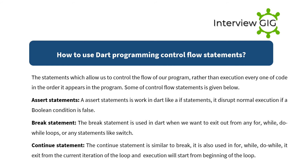How to use control flow statements in Dart? Control flow statements allow us to control the flow of a program rather than executing every line of code in order. Some control flow statements are: Assert — disrupts normal execution if a boolean condition is false; Break — used to exit out of for, while, do-while loops, or switch statements; Continue — similar to break, it exits the current iteration of a loop and execution restarts from the beginning of the loop.